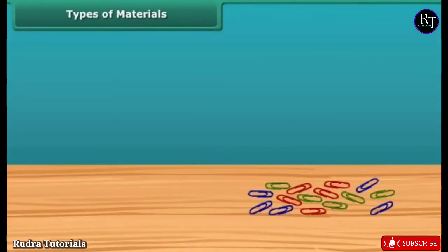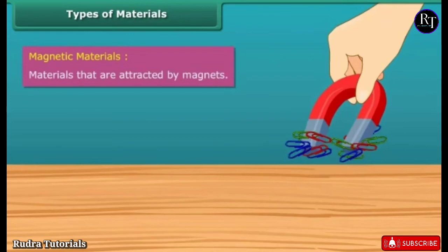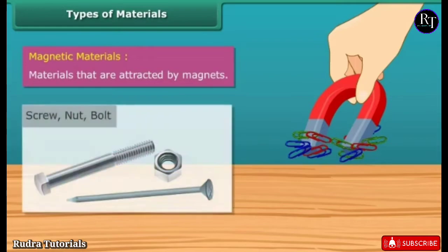Types of materials — let us look at the types of materials. Materials that are attracted by magnets are called magnetic materials. For example, screws, nuts, and bolts are magnetic materials.